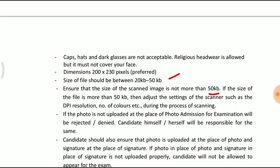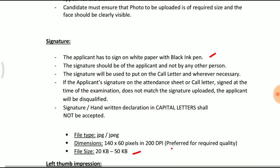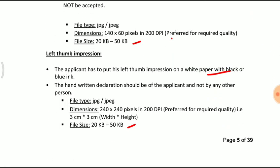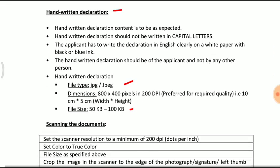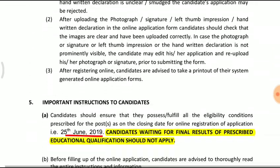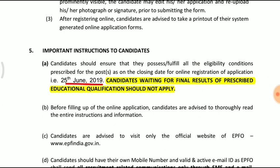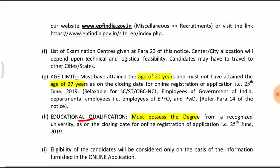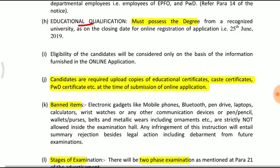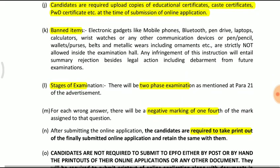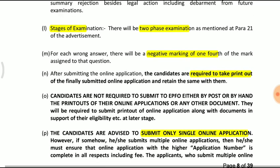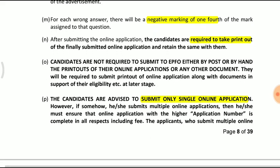The photo is 50kb, the signature is 50kb, and the left thumb impression is 50kb — use white paper with black or blue ink. The deadline is 20th June. Once you have finished, submit the application. The exam has 2 phases: Phase 2 is 90 marks.